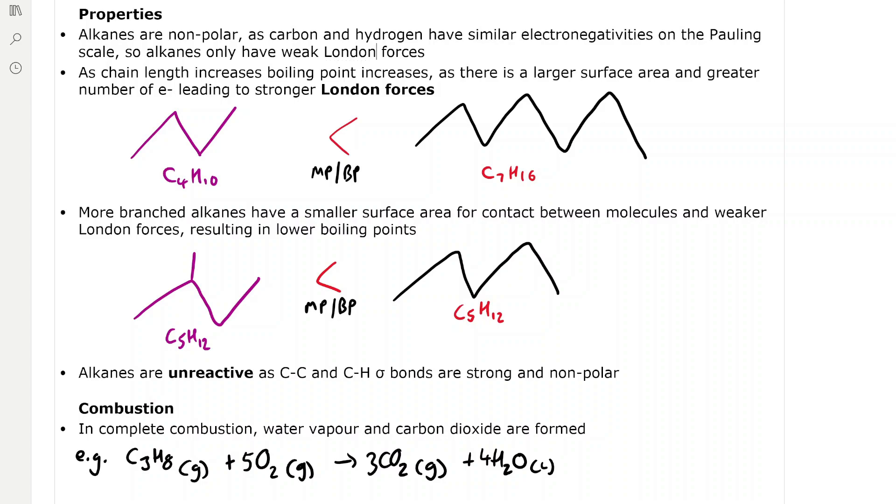For example, 2-methylbutane which has the same molecular formula as pentane, so they're structural isomers, have different melting and boiling points because 2-methylbutane has a branch which pushes the molecules apart, decreasing the London forces and resulting in lower boiling points.